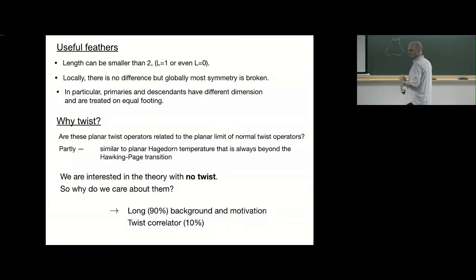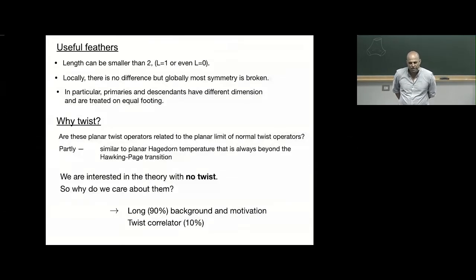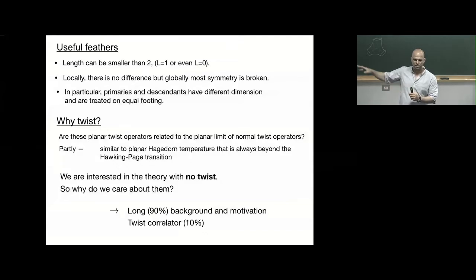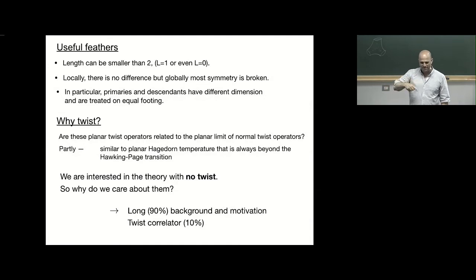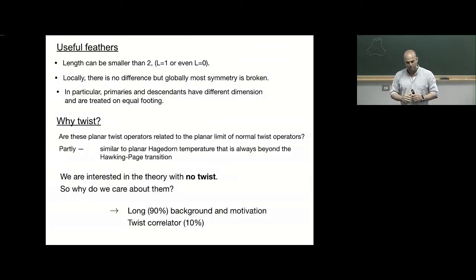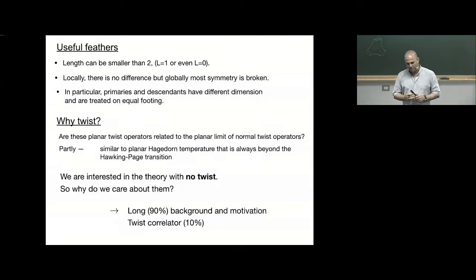I wanted to describe what a general twist operator is — for example, the one that arises in entanglement entropy — versus the twist in color space. The question is: are these related to each other? If you take the planar limit, it turns out they are related but not quite the same. As a familiar example: consider N=4 on a sphere times a circle with temperature. The analog of the color twist operator would be the Polyakov loop — the Wilson loop that goes around the thermal cycle — which is a twist by translation in time. Whether those diagrams appear depends on the phase of the theory, as determined by the Hawking-Page transition.